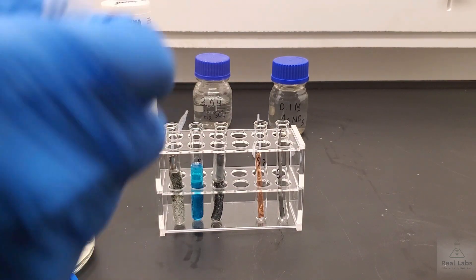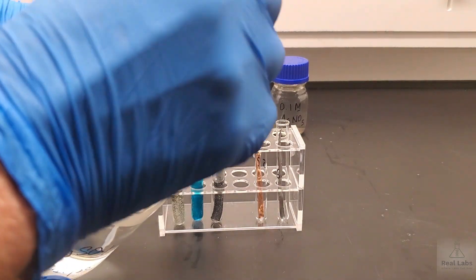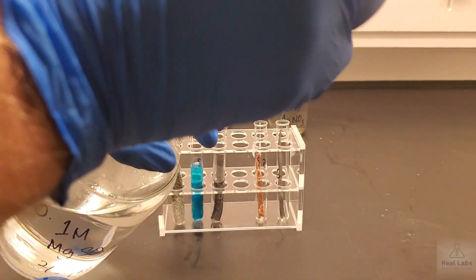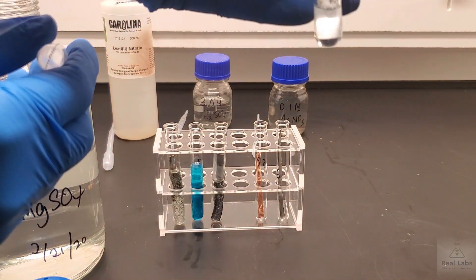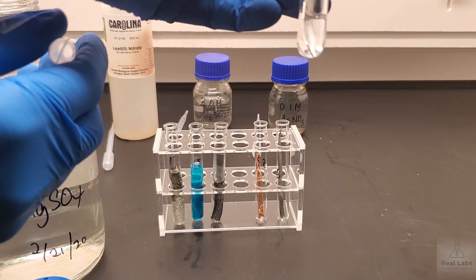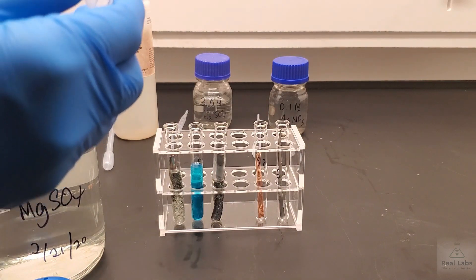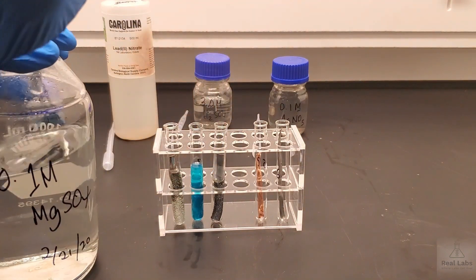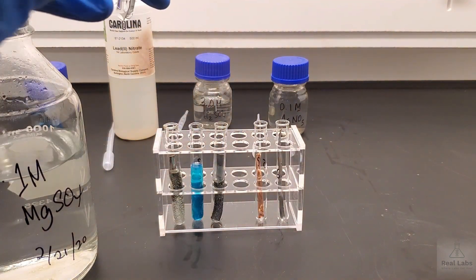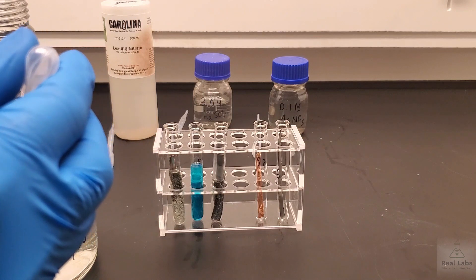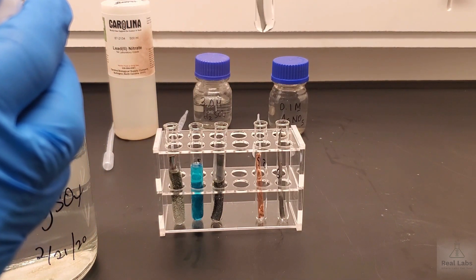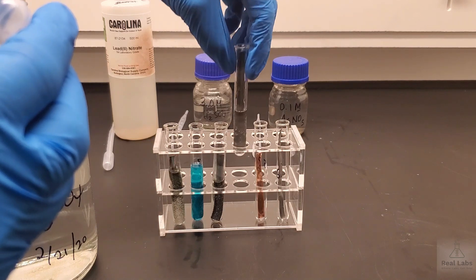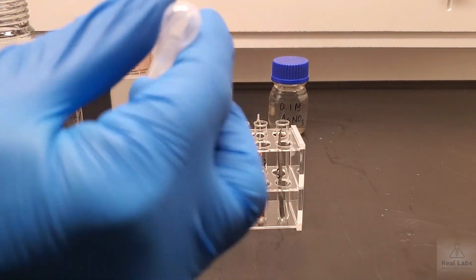We have the zinc strip in here. We're going to add some magnesium sulfate to this and see if anything happens. We'll just put a little bit in there at first. See if we can see anything happening. Then we'll take a look. First glance doesn't look to be particularly reactive. We'll let that go for a little bit.